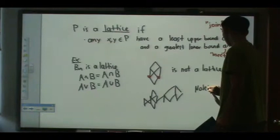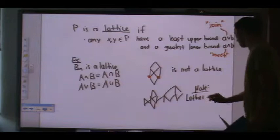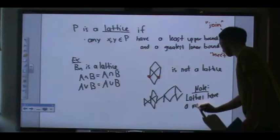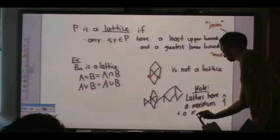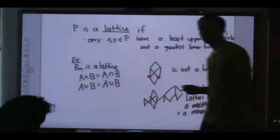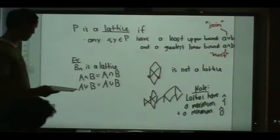So lattices have a maximum element, which we call one-hat (1̂), and a minimum element, which we call zero-hat (0̂). You have to be careful about maximum versus maximal. If you want to know if something is a lattice, the first thing to check is whether it has a unique top and bottom element.